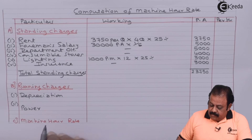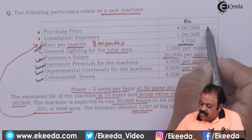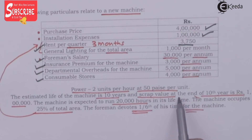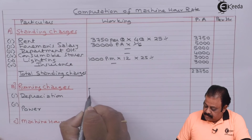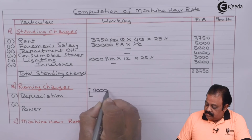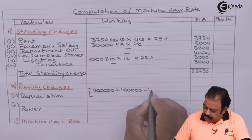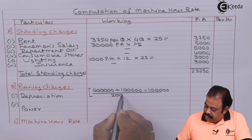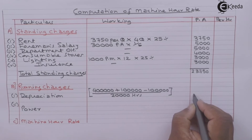Now we calculate running charges. First is depreciation. Purchase price is 4 lakhs plus installation expenses of 1 lakh, minus scrap value of 1 lakh, divided by the life of machinery of 20,000 hours. This gives depreciation of rupees 20 per hour. The machine runs 20,000 hours over 10 years, which is 2,000 hours per year.